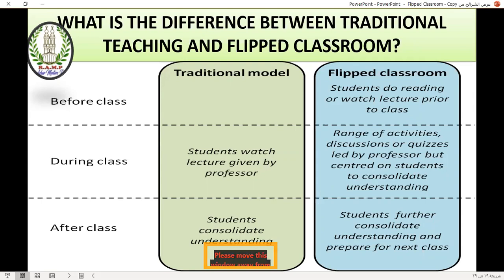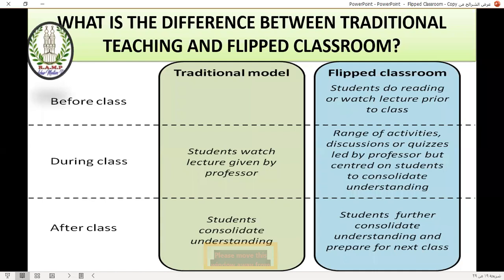In a comparison between the traditional model and flipped classroom, we divide into three phases: before, during, and after class. Before class: in the traditional model, students do nothing; in the flipped classroom, students do reading or watch lectures prior to class — videos from YouTube or designed by the teacher. During class: in the traditional model, students watch lectures from the professor; in the flipped classroom, there are activities, discussions, or quizzes centered on students to consolidate understanding. After class: in the traditional model, students consolidate understanding; in the flipped classroom, students further consolidate and prepare for the next class.